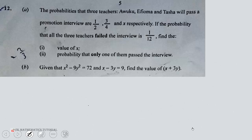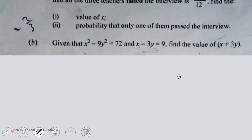So the B part is here. Given that x squared minus 9y squared equals 72 and x minus 3y equals 9, find the value of x plus 3y.